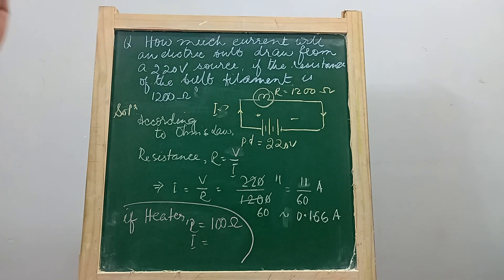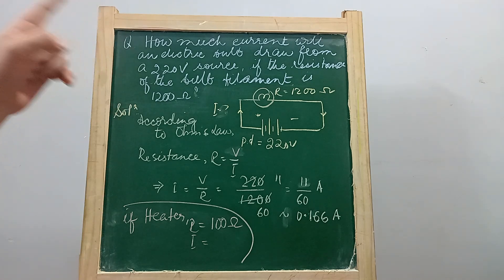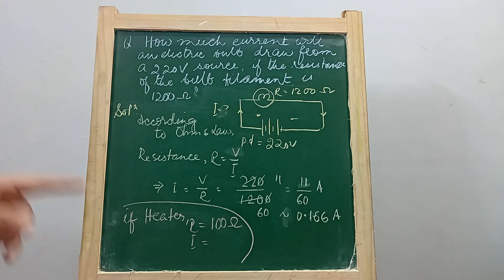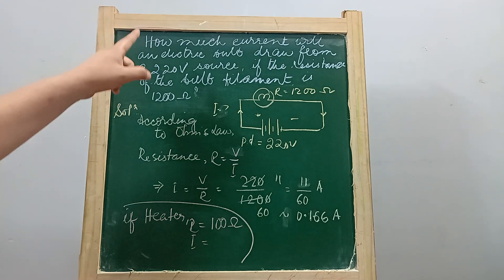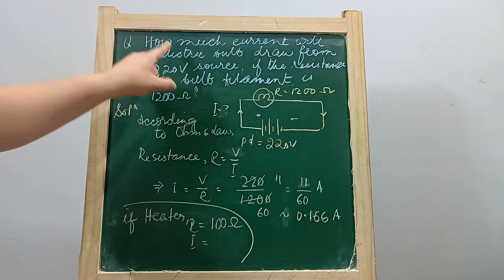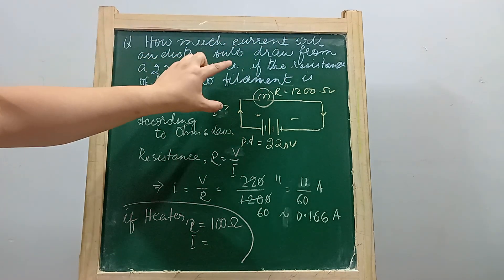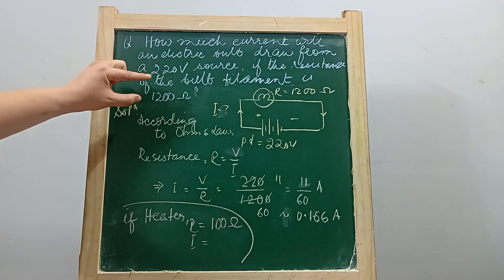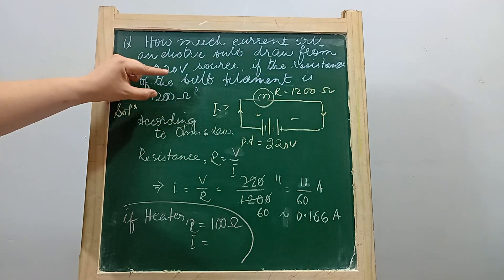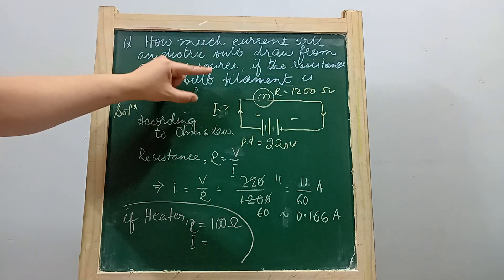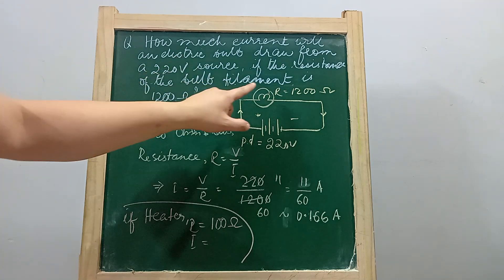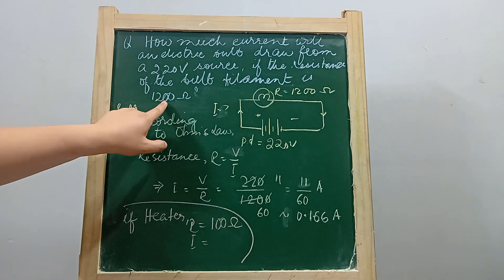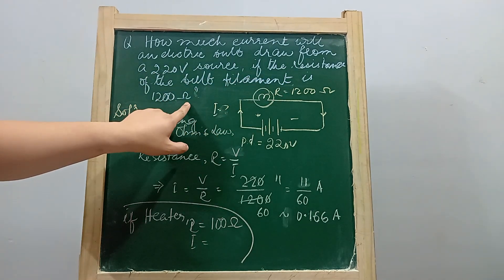Let's consider a problem related to electricity. The question asks: how much current will an electric bulb draw from a 220 volt source if the resistance of the bulb filament is 1200 ohms?